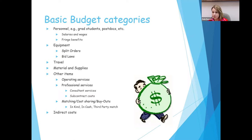With the state budget challenges many universities are facing, we need the extra revenue just to manage the university. This indirect cost recovery is a reimbursable expense to the university to cover the actual costs allocated within any kind of grant.